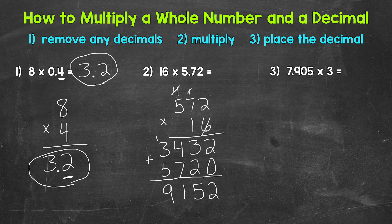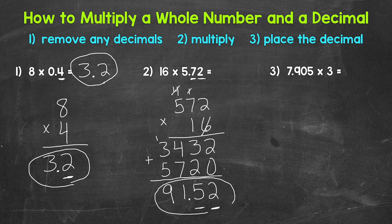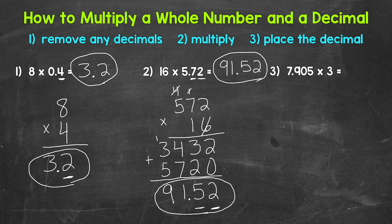But this isn't our final answer — we need to place the decimal. Looking back at the original problem, how many decimal digits do we have? One, two. So our answer needs two: one, two. The decimal goes in between the one and the five. Our final answer is ninety-one and fifty-two hundredths. So 16 times five and seventy-two hundredths equals ninety-one and fifty-two hundredths.